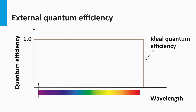Let's say we have a material with bandgap E_gap. The ideal external quantum efficiency would look like this graph. Note that the horizontal axis is plotted in wavelength. Smaller wavelengths correspond to higher energetic photons — the blue spectral part. Longer wavelengths correspond to lower energetic photons — the red spectral part. Above the bandgap, all photons result in a collected electron; in other words, the EQE is 1 or 100%. In reality, the EQE is always smaller than 100% and its value varies with wavelength.